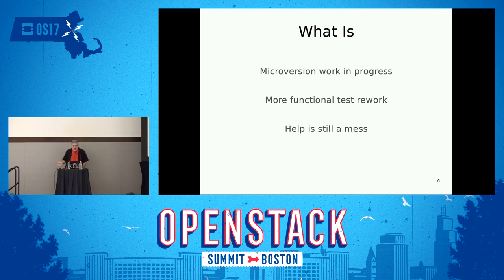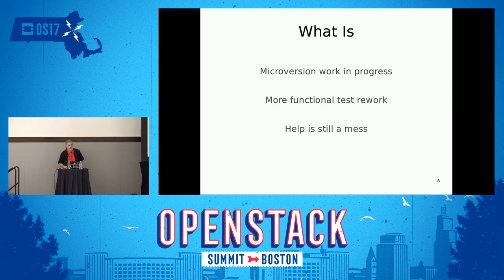The stuff that's in progress right now is mostly focused around microversion support. OpenStack Client doesn't have any real microversion support in it. You can give it a specific microversion in the API version configuration, but that's the extent of it — and you have to know; it requires the user to have to know. We're also doing a lot of work around functional tests right now. One of the reasons we've had delays in releases is because our functional tests that run all of those listed projects on their master tip was broken, so we've had to spend quite a bit of time working on that.